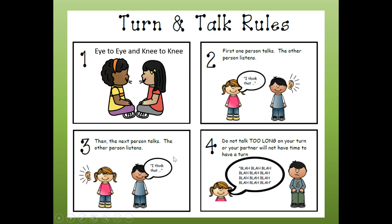When we have turn and talk, we go over these rules. Number one, if you have a partner at home, look at them and be next to them. Number two, the first person talks and the other person listens — so if you're my partner, listen when I'm talking, then talk when it's your turn. Do your best sharing your thinking out loud. Number four, don't talk too long or your partner won't have enough time for a turn.